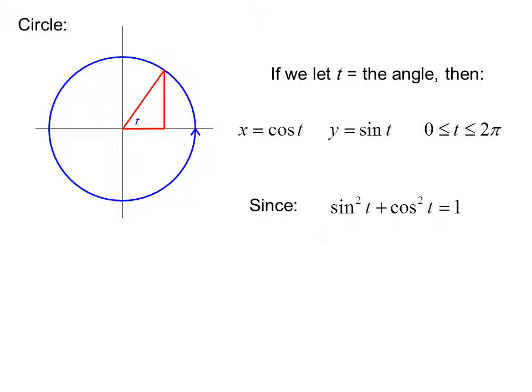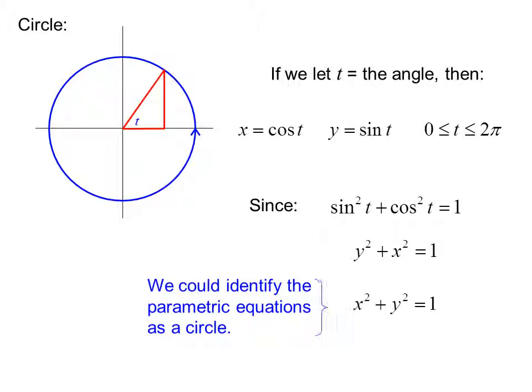Y equals sine t, and t goes from zero to two pi. Since sine squared t plus cosine squared t equals one, we have y squared plus x squared equals one.